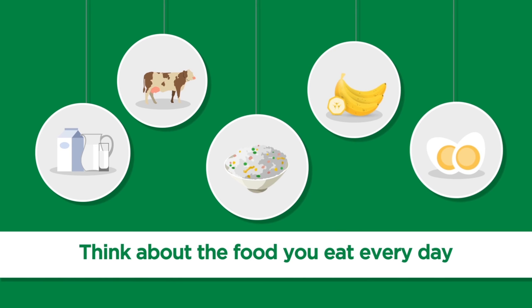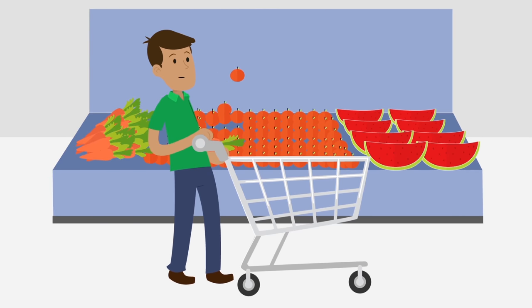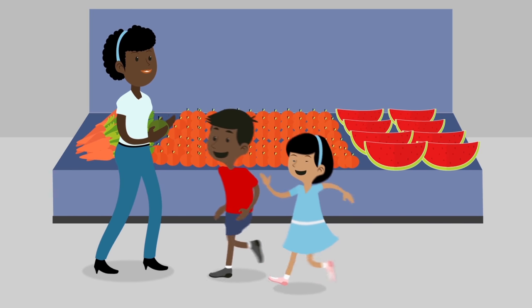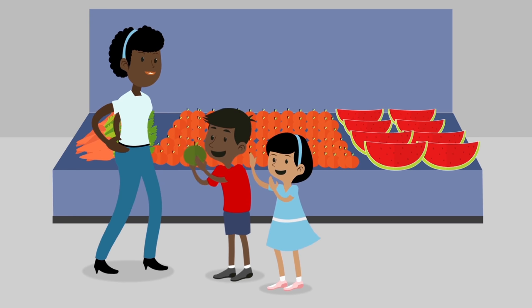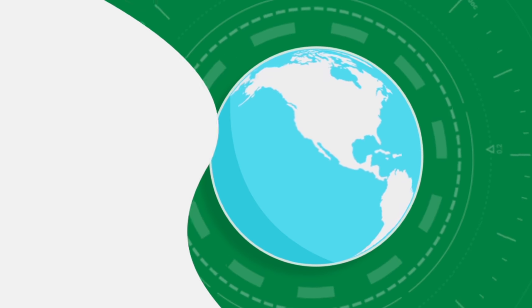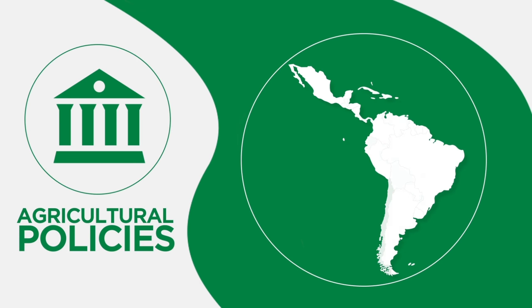Think about the food you eat every day. You probably know how much that food costs, but do you know why? And did you know that what influences the cost of your food also plays a very important part in food security and climate change? Policies that influence all these issues are what we call agricultural policies.